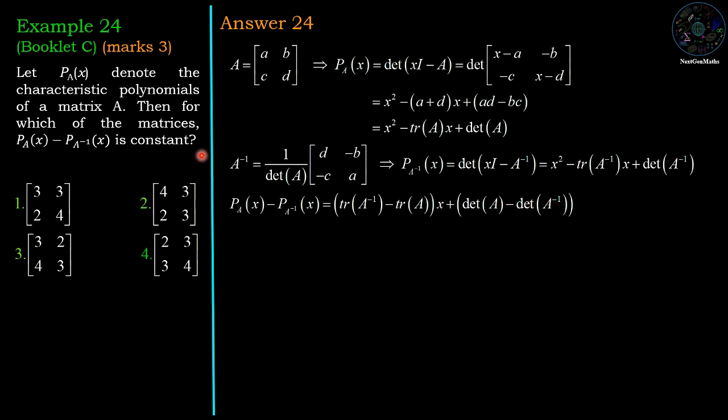But we want this to be constant, so this difference should be constant. It is constant when the coefficient of x should be 0, so trace of A inverse minus trace of A equal to 0.